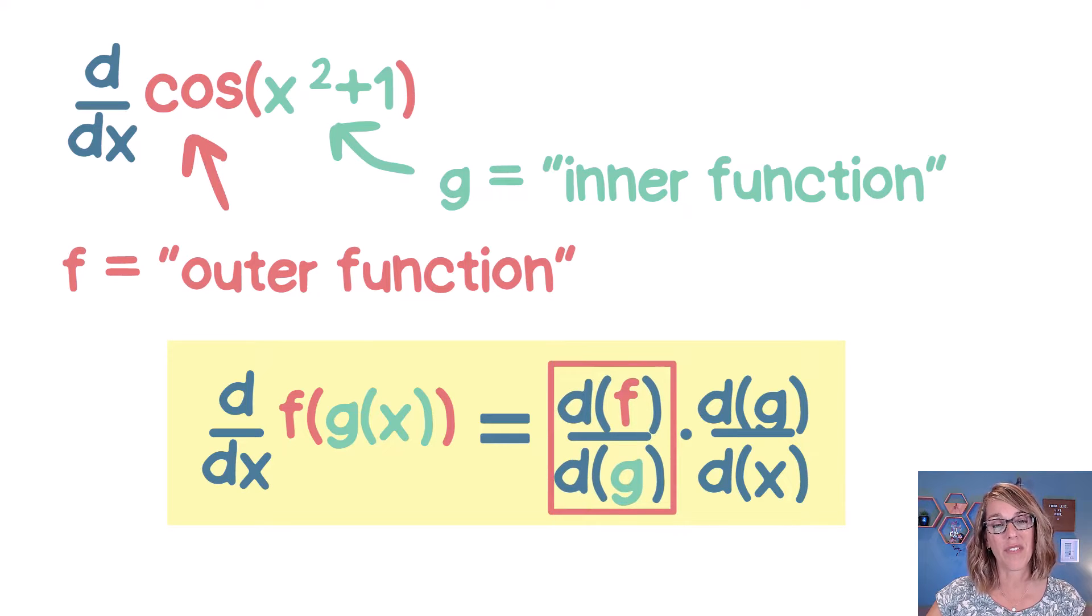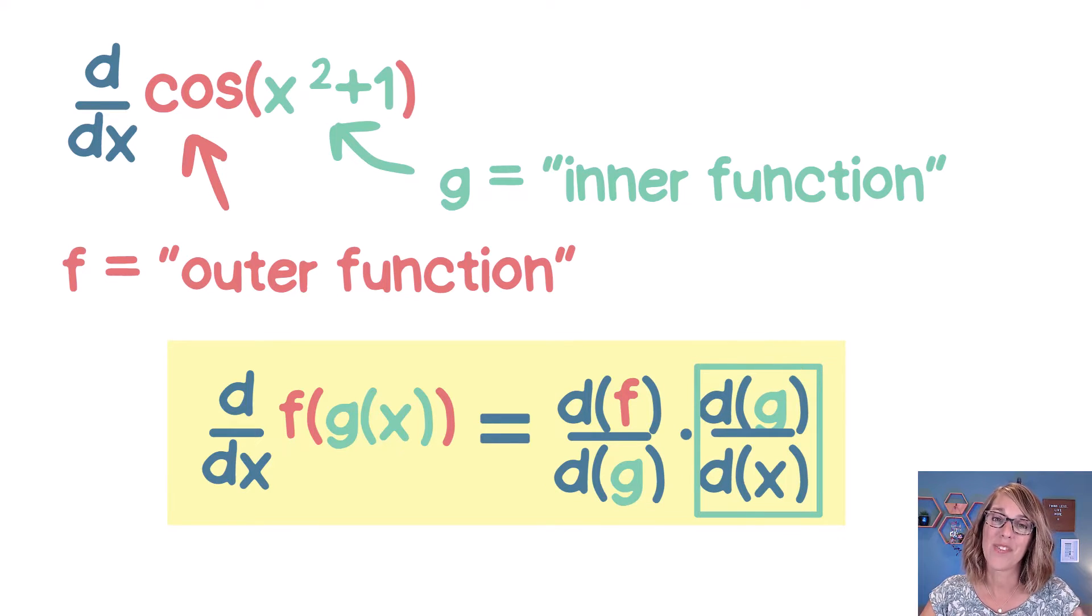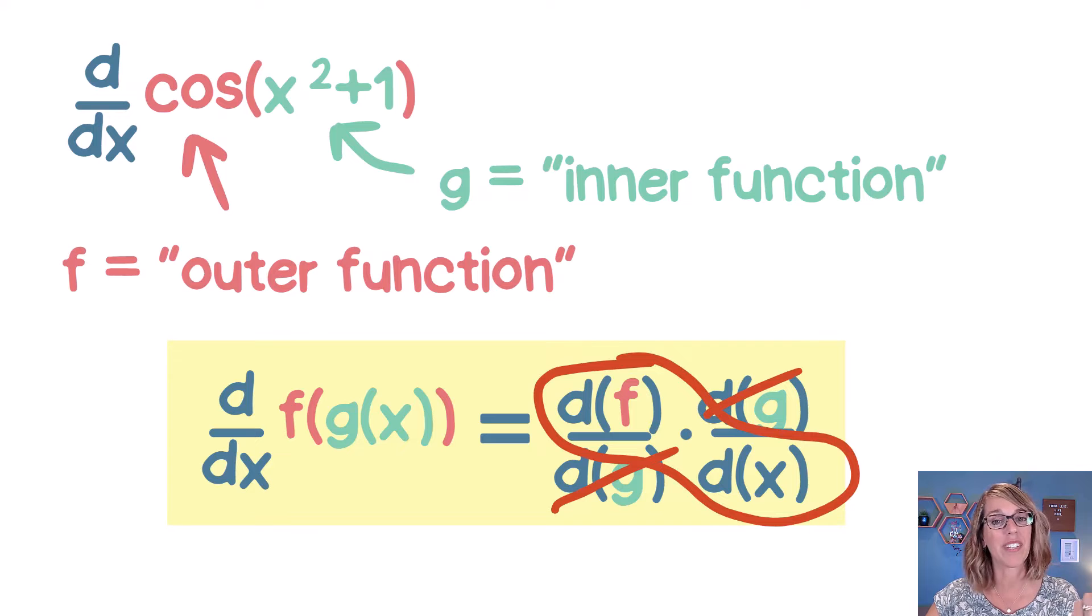We're going to take the derivative of the outer function with respect to the inner function, and then multiply that by the derivative of the inner function with respect to x. Leibniz notation is so nice because those derivatives of g cancel out and we're left with exactly what we wanted, the derivative of the function with respect to x.